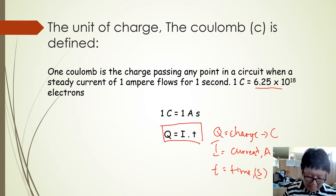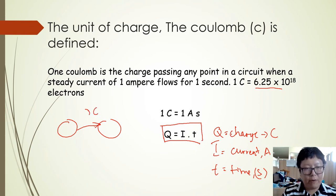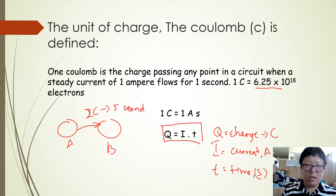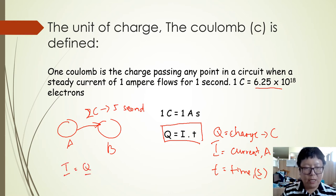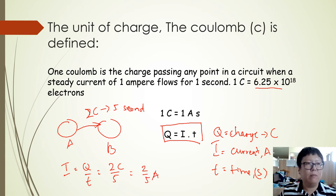Example: two coulombs of electric charge flow from A to B in five seconds. How much is the current? The current is Q over t, so two coulombs divided by five seconds equals 0.4 amperes.